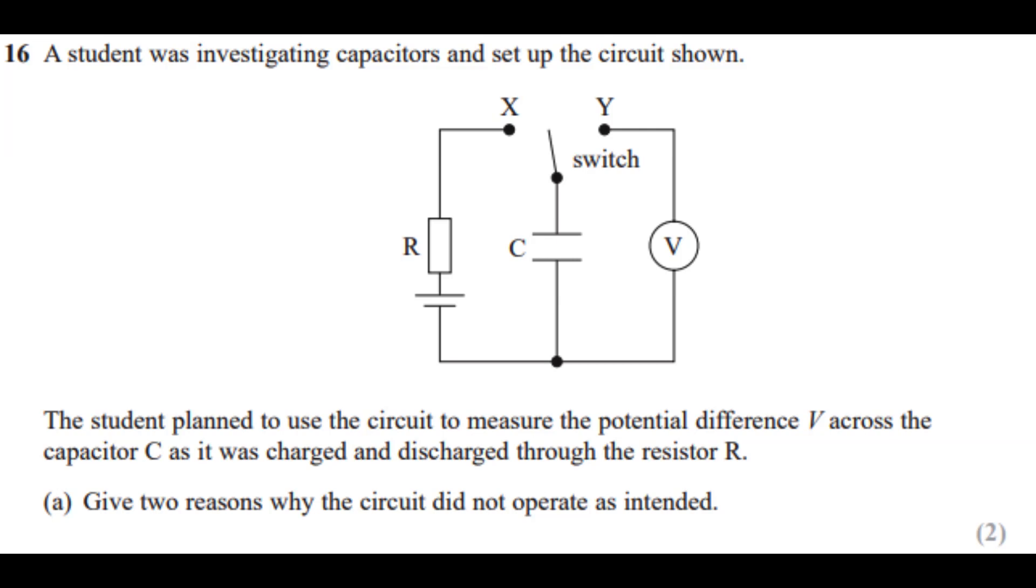We can see that the voltmeter should be where it's charging, which is at point X, and this resistor should be at point Y, because we need to know whether the capacitor is charged or not.